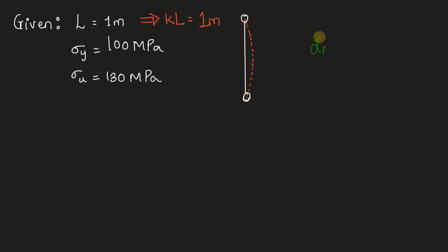We have to find out D minimum, that is the minimum diameter of the rod such that it does not buckle before reaching the yield point. We can calculate the buckling load value using two methods. It is given that it should not buckle before reaching the yield point.